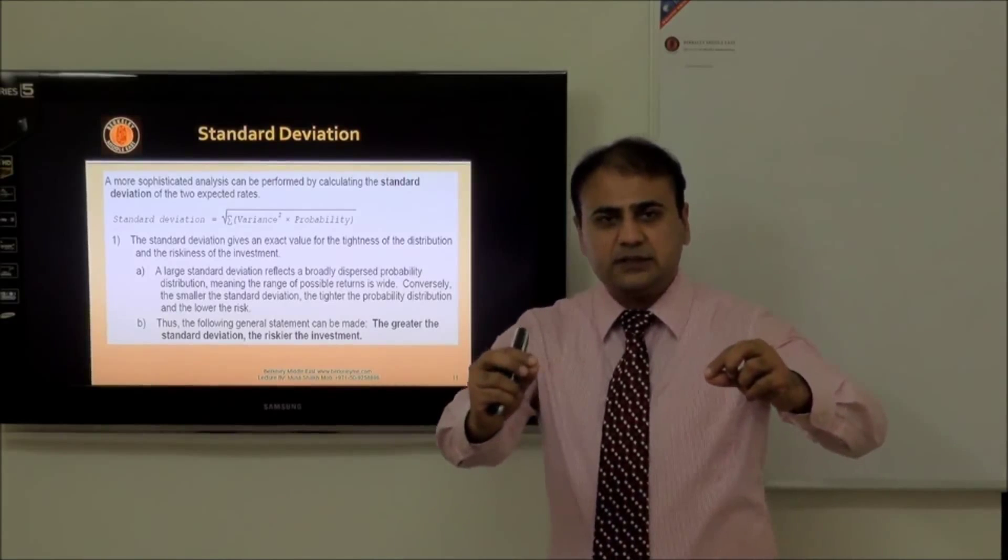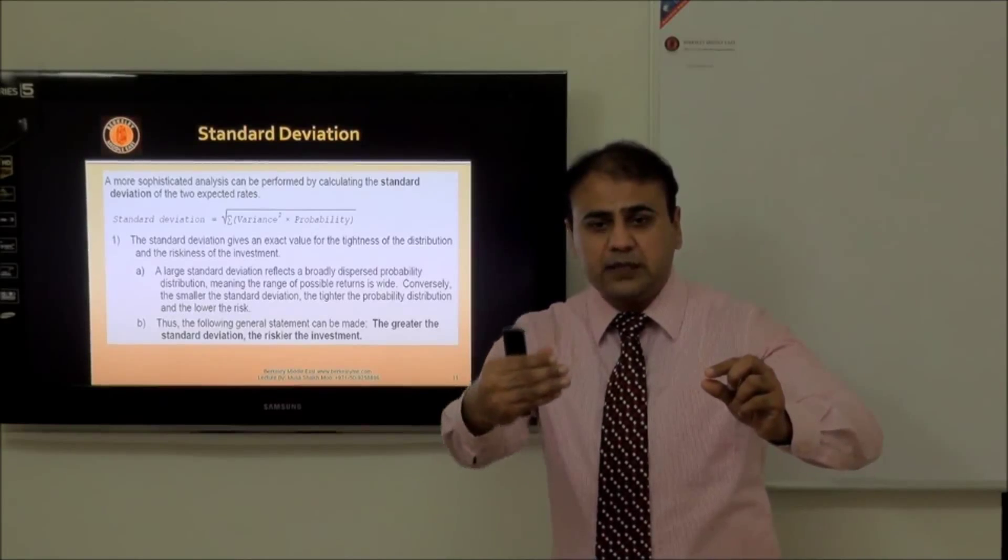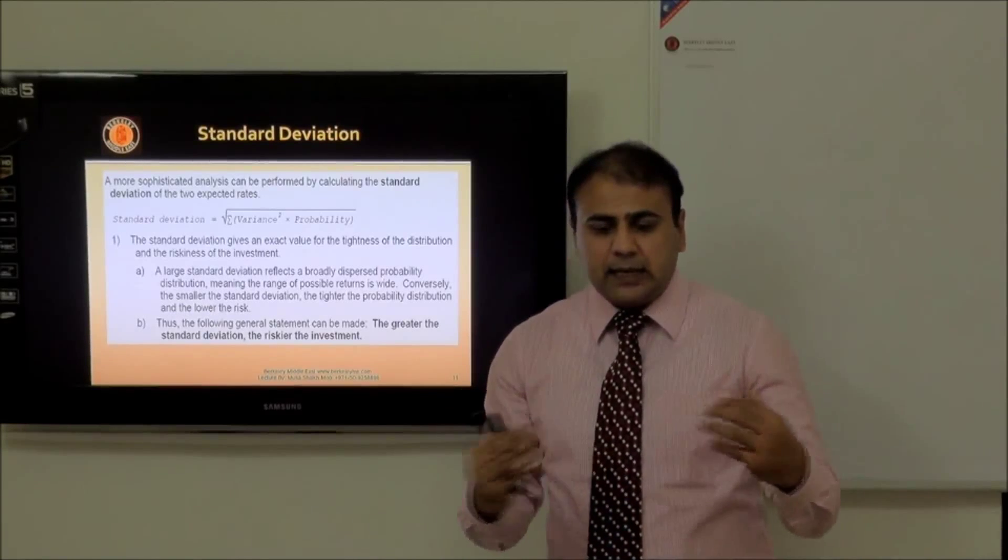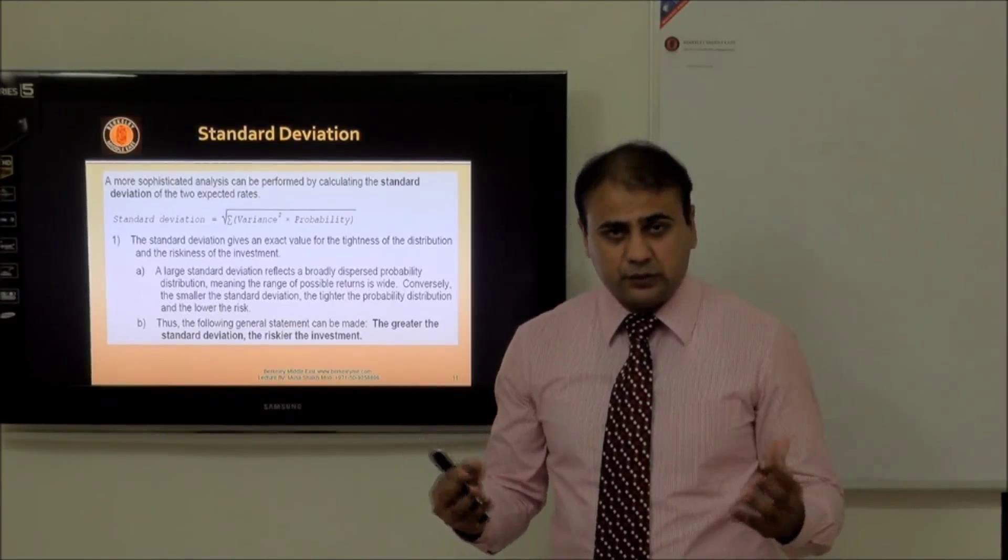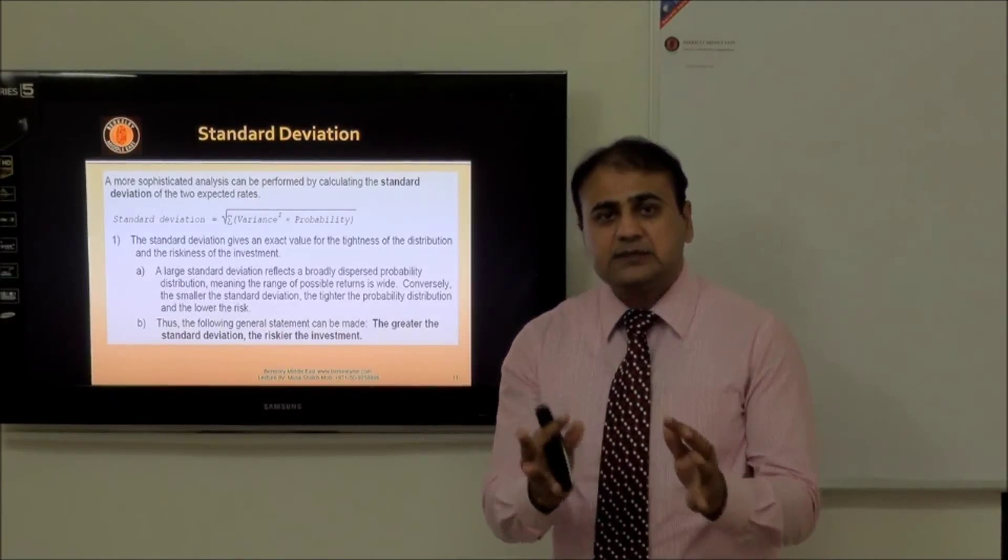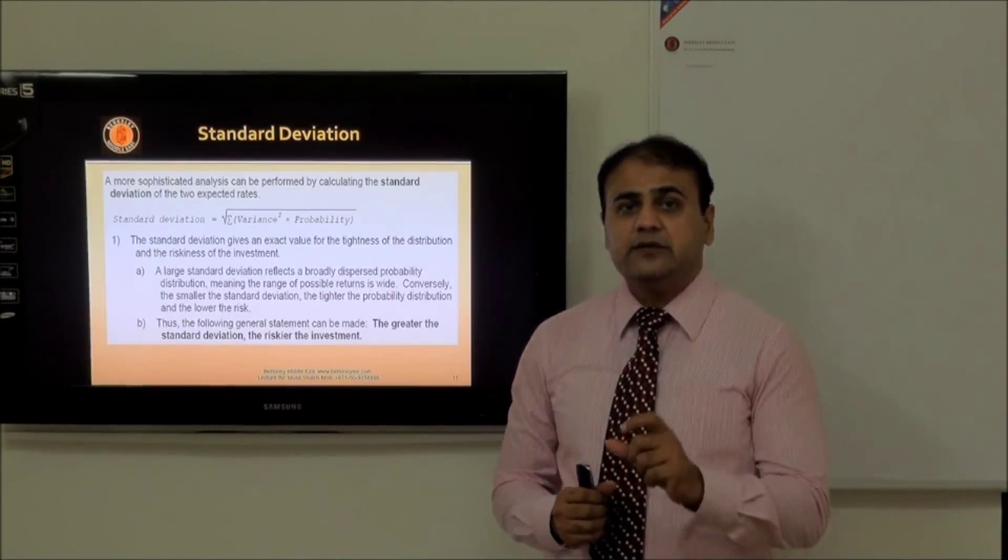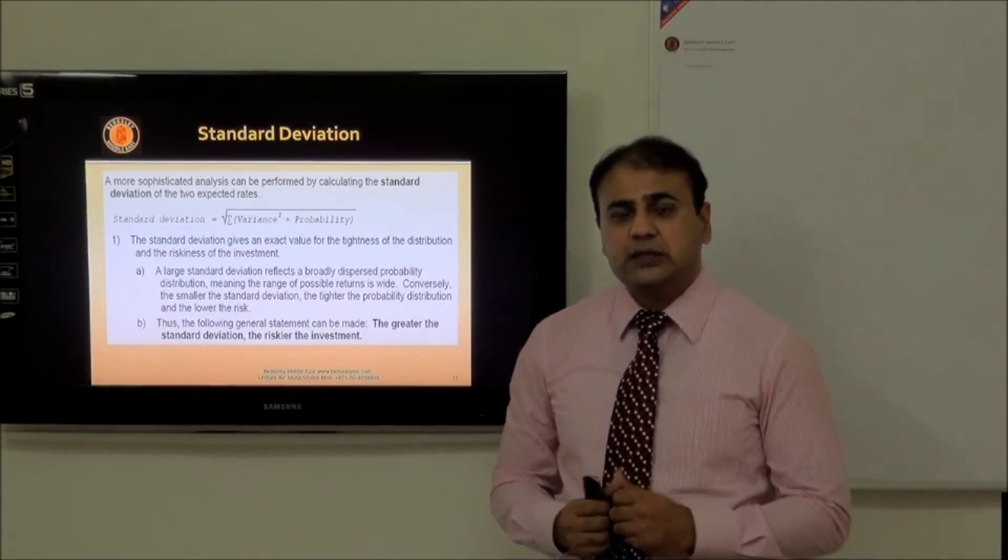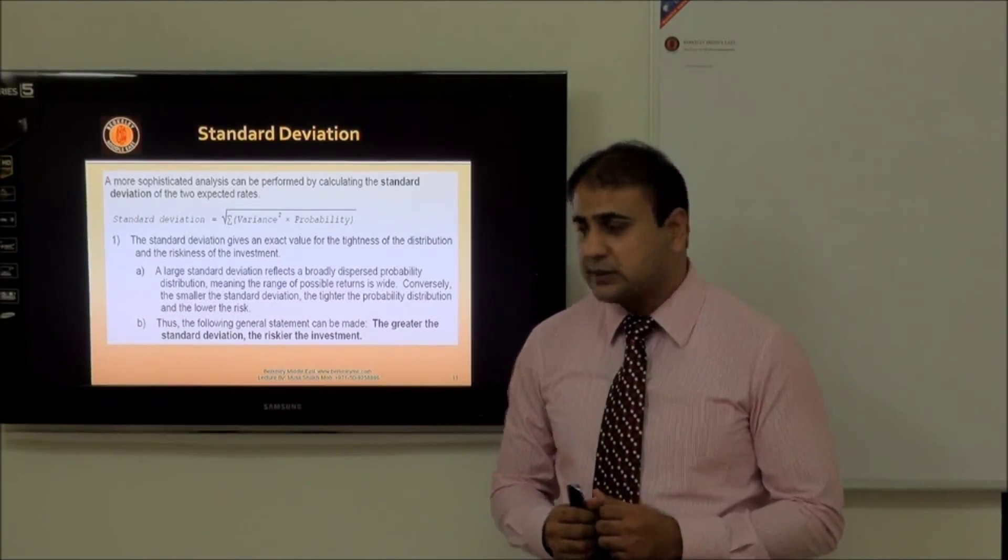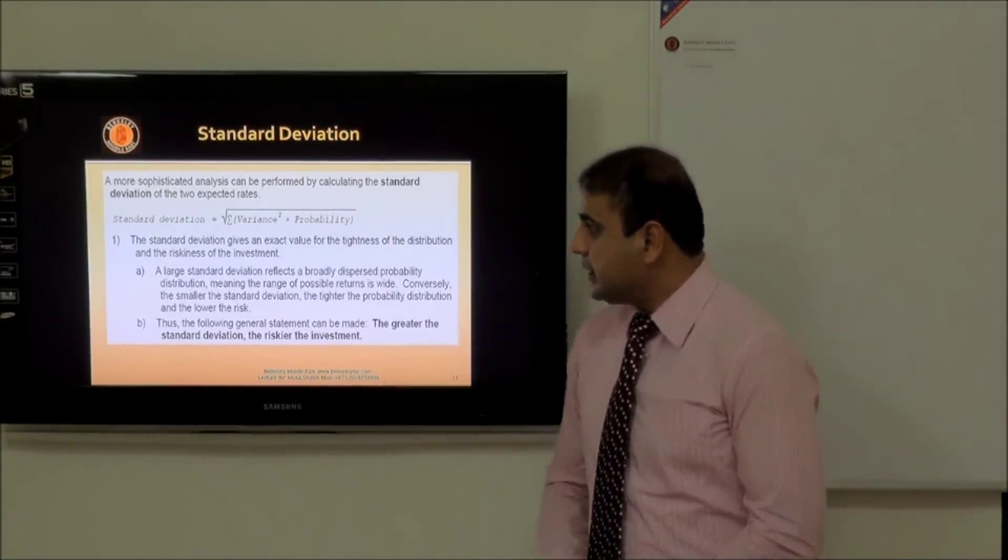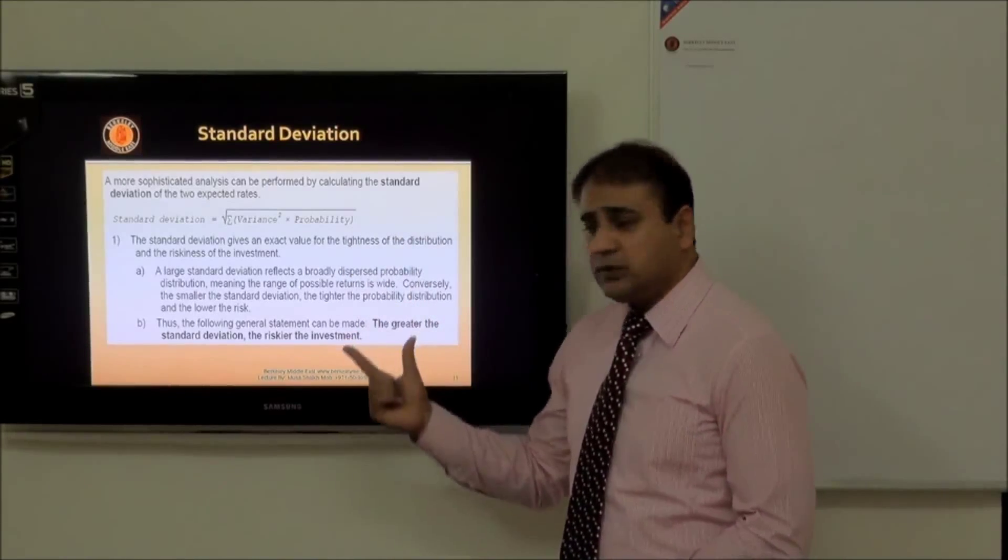Now deviation is derived from the difference of what we think and what we achieve. As logic, the greater the standard deviation, the bigger the problem is for you. The fewer the deviation means the things are in your control. That's why as an investor it's very important to see the deviations, and we use the concept of standard deviation. The square of this is called variance. Standard deviation is the square root of the variance into probability - this formula we are going to use.